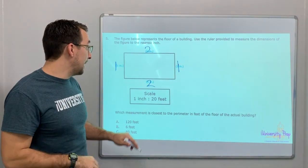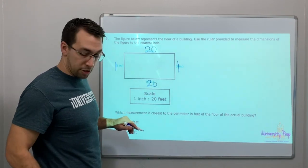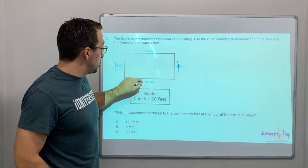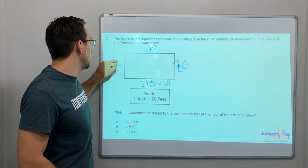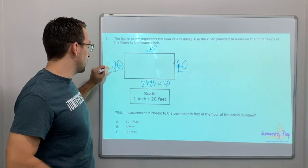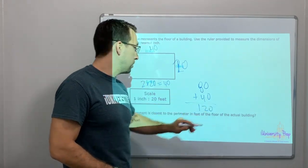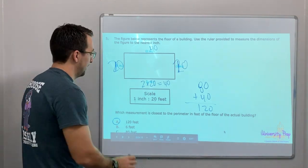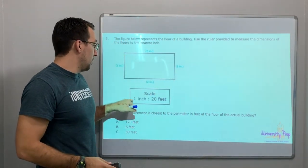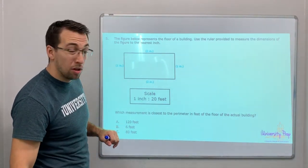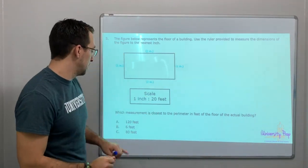1 inch equals 20 feet, so we need to multiply. 1 times 20 is 20. But it's 2 inches, so it should be 2 times 20, which equals 40. And 1 times 20 is 20. So 40 plus 40 plus 20 plus 20 equals 120 feet — that's the perimeter. It's a scale: 1 inch equals 20 feet. So if a side is 2 inches, that's 2 times 20 equals 40 feet.